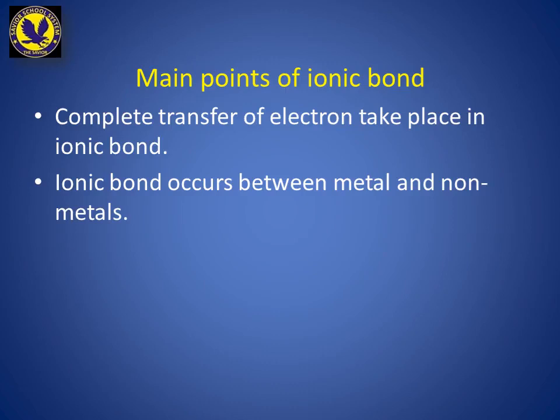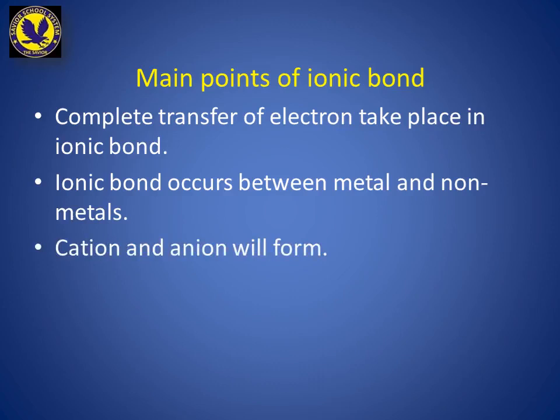The metal donates its electron to the non-metal to complete its outer shell. This creates a force of attraction forming an ionic bond. The third point: cations are positively charged and anions are negatively charged.